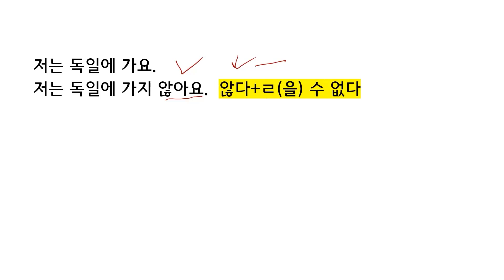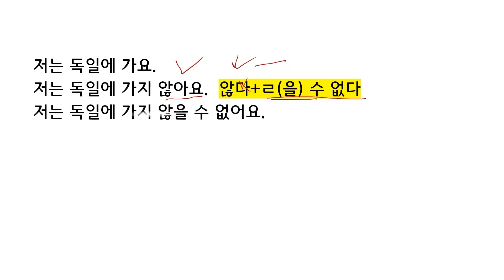Combine ANAYO with ULLSUEPTA — replace 'stay' with ULLSUEPTA and you have 않을 수 없다. 저는 독일에 가지 않을 수 없어요. 않을 수 없어요. ANTA is 'not', 을 수 없다 is 'cannot', so 않을 수 없어요 means 'cannot not'.